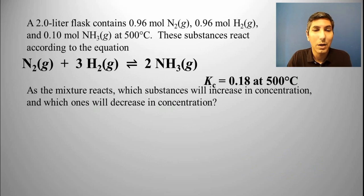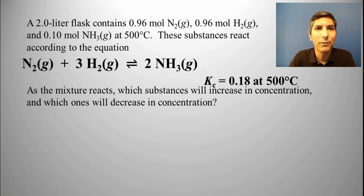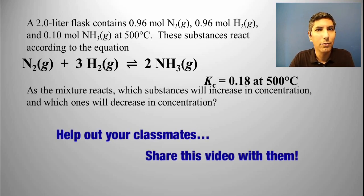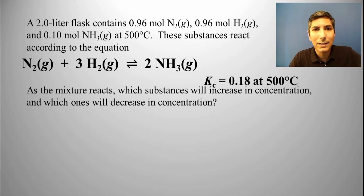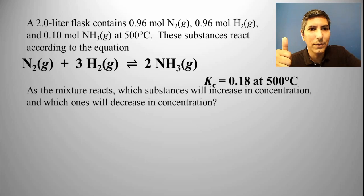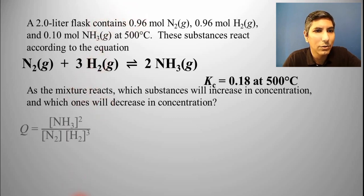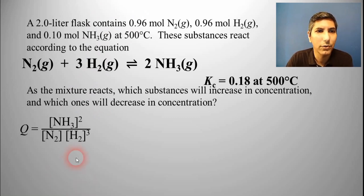Let's try another example using the same chemical equation. This time a 2.0-liter flask contains 0.96 moles of nitrogen gas, 0.96 moles of hydrogen gas, and 0.10 moles of ammonia gas at 500 degrees Celsius. The question asks: as the mixture reacts, which substances will increase in concentration and which will decrease? We'll plug these concentration values into the reaction quotient expression — products over reactants raised to the power of the coefficients.